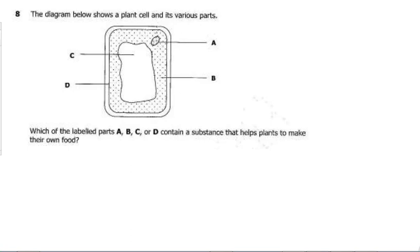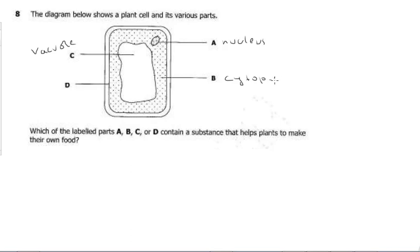We've got part A, part B, part D, and part C. So what is part C? If it's a plant cell, part C is known as the vacuole. So this is the vacuole. Part A is the nucleus. Part B is the cytoplasm. And part D is the cell membrane.